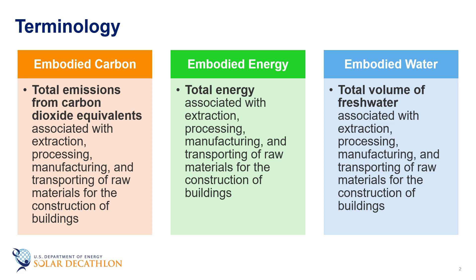Now let's go over some definitions and distinctions. Embodied carbon is the term you'll hear most frequently. Embodied carbon is the total emissions from carbon dioxide equivalents associated with the extraction, processing, manufacturing, and transporting of raw materials for the construction of buildings. In other words, embodied carbon is the carbon footprint of a building before it becomes operational.